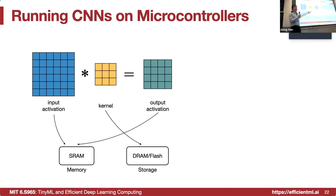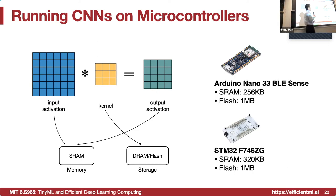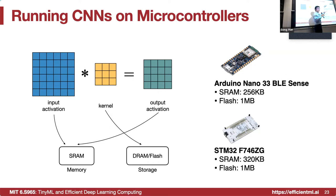The kernel weights are static — the same across the entire inference lifecycle — so we put them in read-only memory such as flash. This is permanent storage. For input and output activations, those are different for different images, so we put them in both readable and writable memory, which is SRAM. For microcontrollers like the STM32, there's 256 kilobytes of SRAM and one megabyte of flash. Another popular platform is the STM32 F746, which we widely use in our experiments. This board has 320 kilobytes of SRAM and one megabyte of flash.